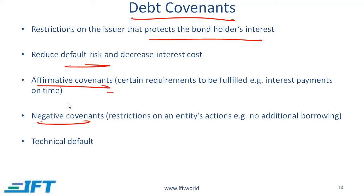Negative covenants are where a company says it will not do something — for example, a company will not issue new debt. Both affirmative and negative covenants are there for the benefit of the investor. Technical default is a term used where one of the covenants has been violated. For example, a company that said it would not issue new debt does so anyway. Even though payments to the investor are being made, one of the covenants has been violated — that is called a technical default.